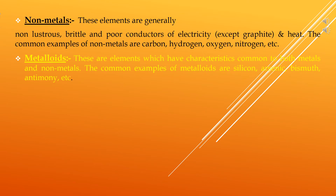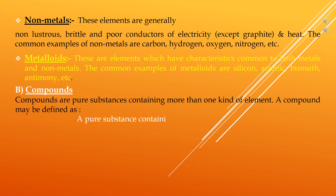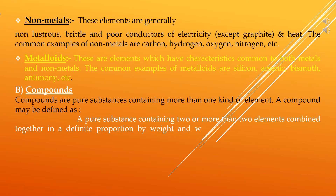Now let's discuss the second type of pure substance: compounds. Compounds are pure substances containing more than one kind of element. A compound may be defined as a pure substance containing two or more elements combined together in a definite proportion by weight, and which can be decomposed into its constituent elements by suitable chemical methods.